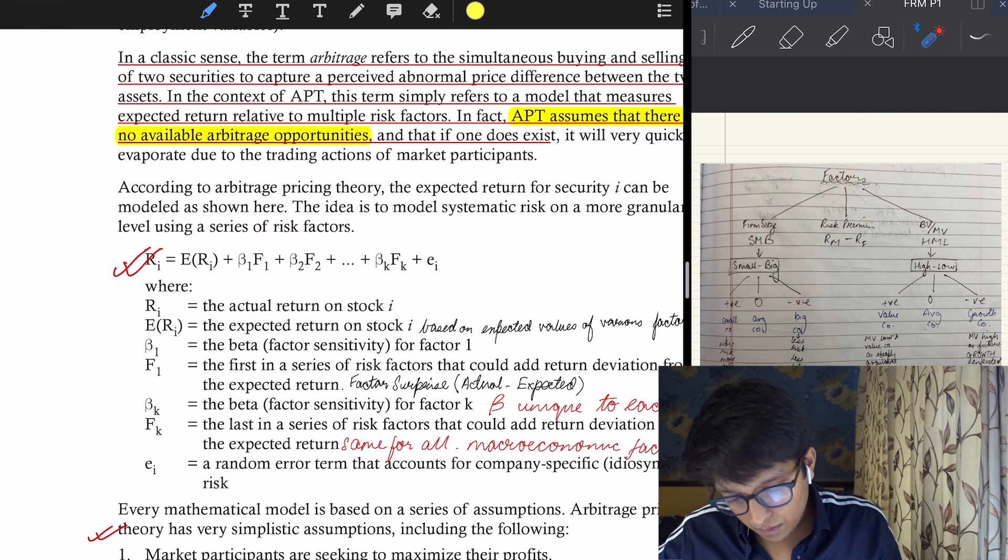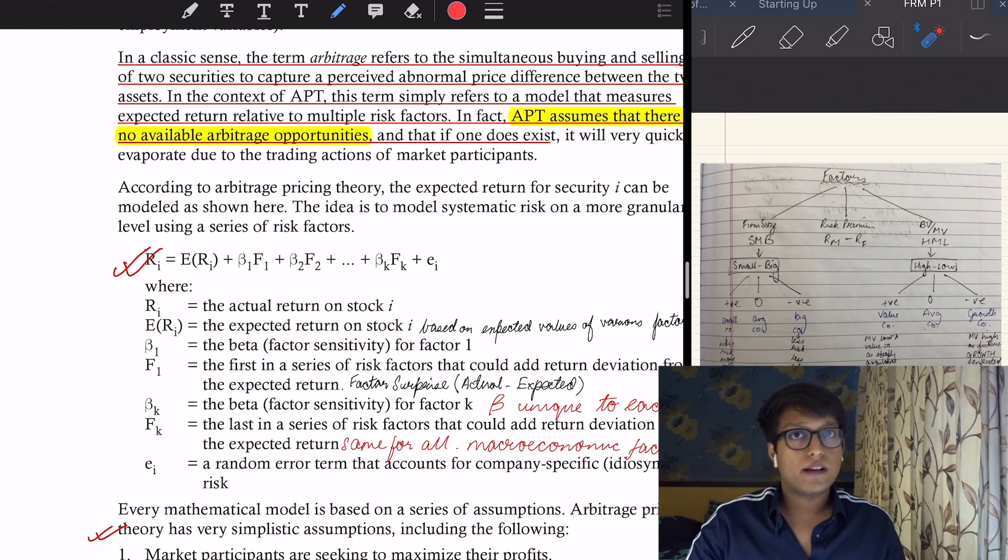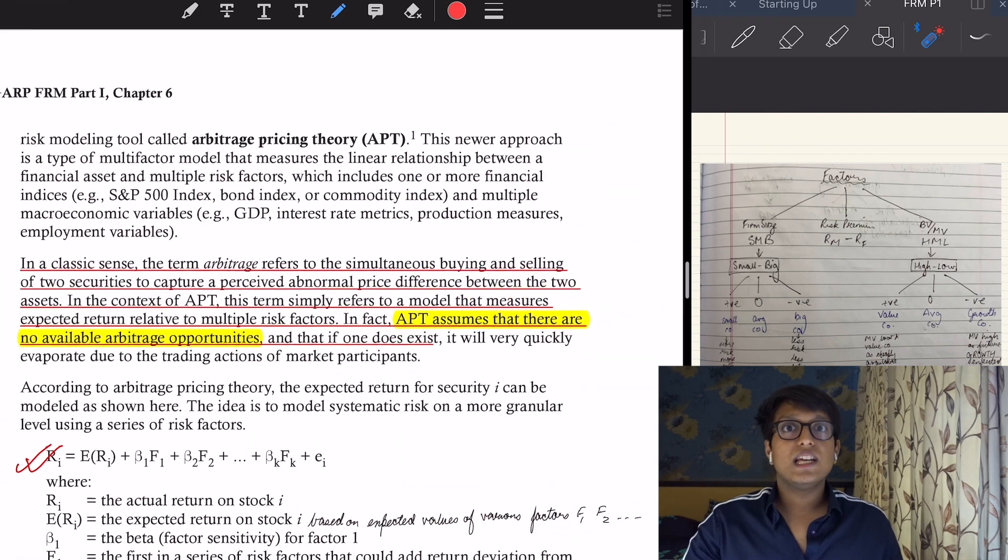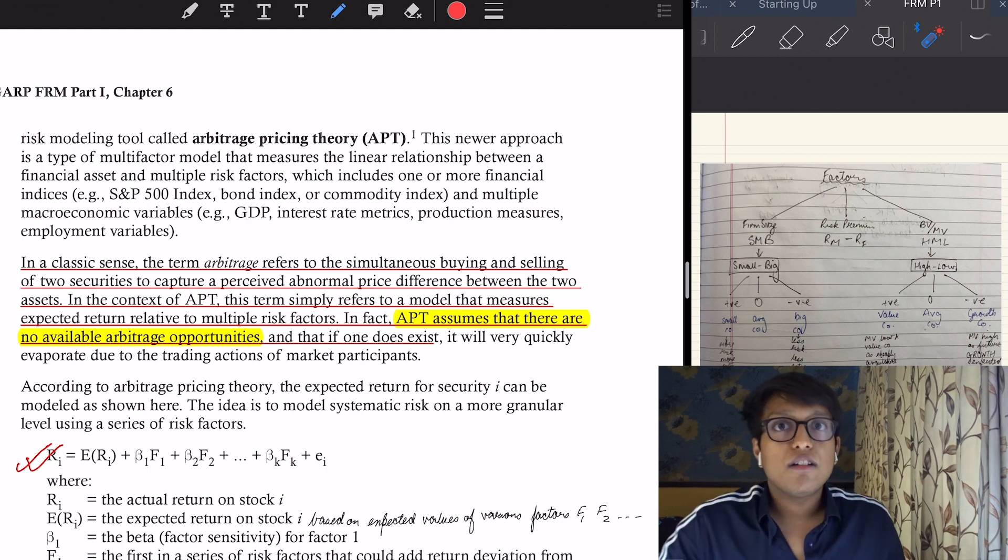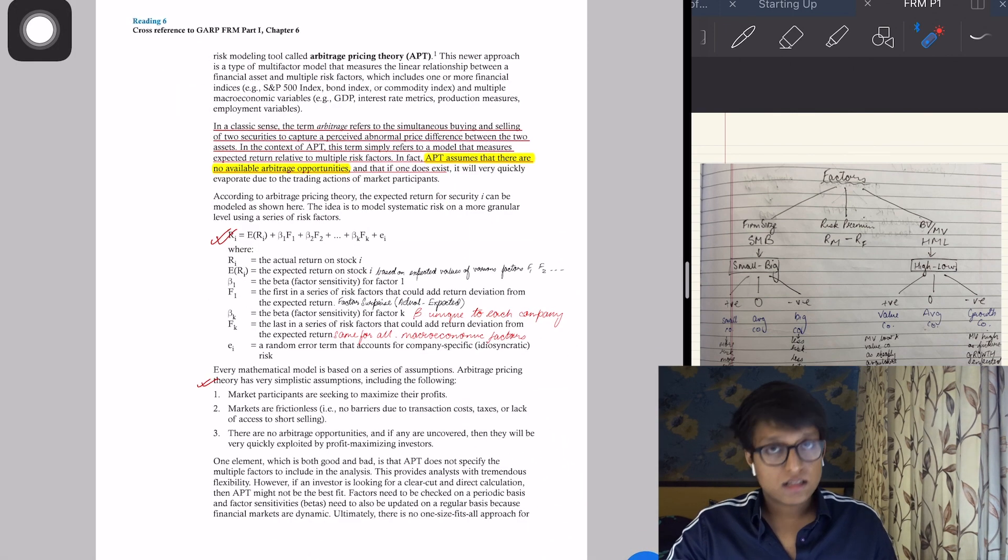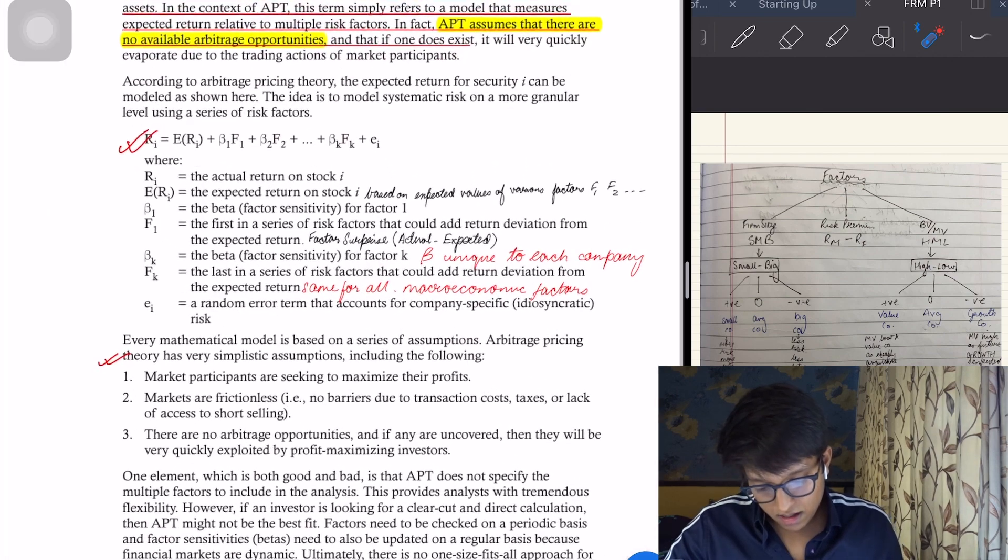In this first part with the equation I've taken, the return equals the expected return plus beta. Beta was earlier the sensitivity of the stock price to the market. Here, beta 1 would be the sensitivity of the stock price to factor 1—let's say GDP—plus sensitivity to factor 2 times factor 2—let's say inflation—and up to k, n factors, plus an E part which is the unsystematic or specific risk of the company which cannot be modeled with any factors or beta. That's the crux of the chapter.